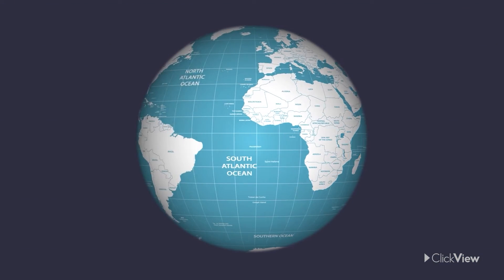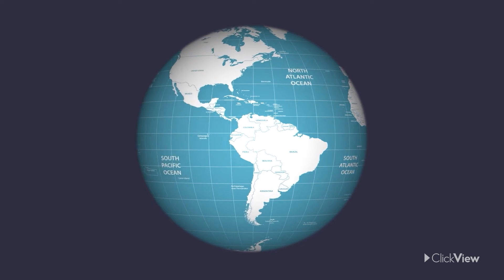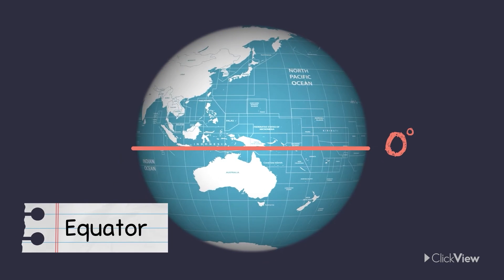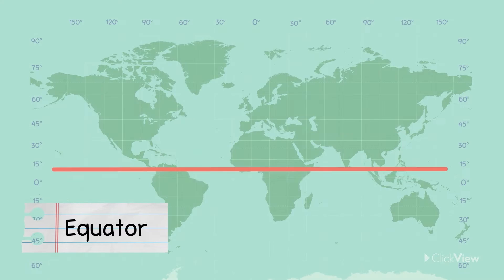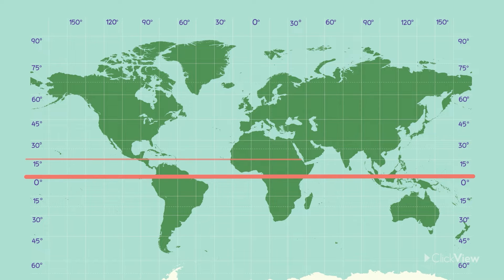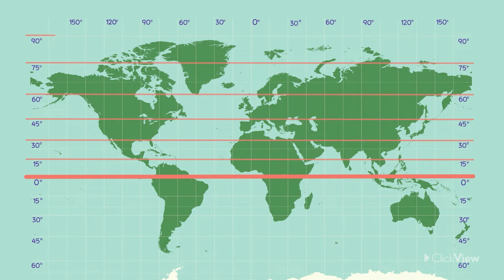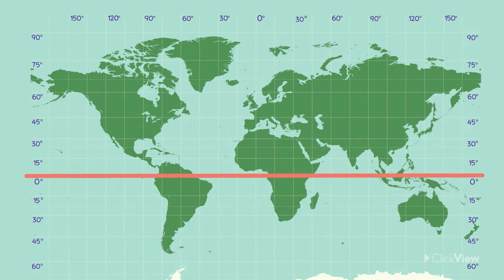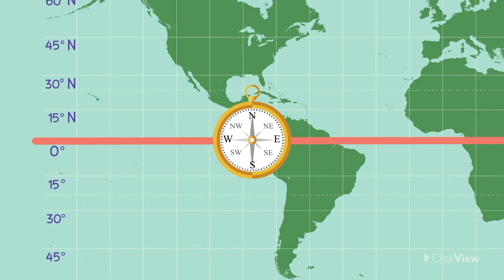Lines of latitude, or parallels, are imaginary lines that run horizontally around the planet. The equator is at zero degrees. These lines represent 15, 30, 45, 60, 75, and 90 degrees north of the equator. Lines of latitude show how far a place sits north or south of the equator, so we write an N for locations north of the equator and an S for locations south of the equator.